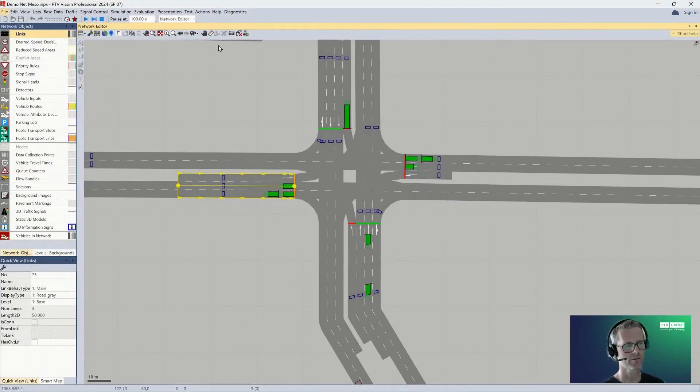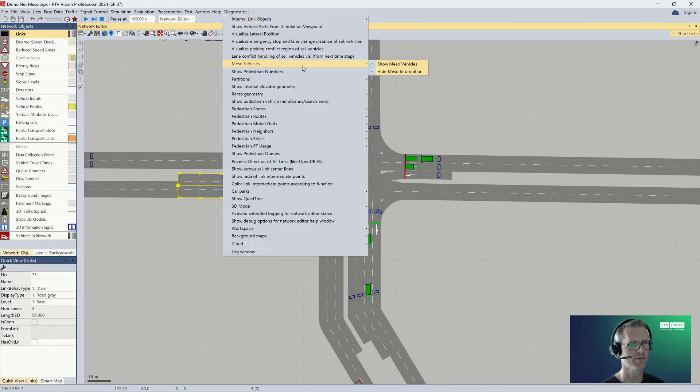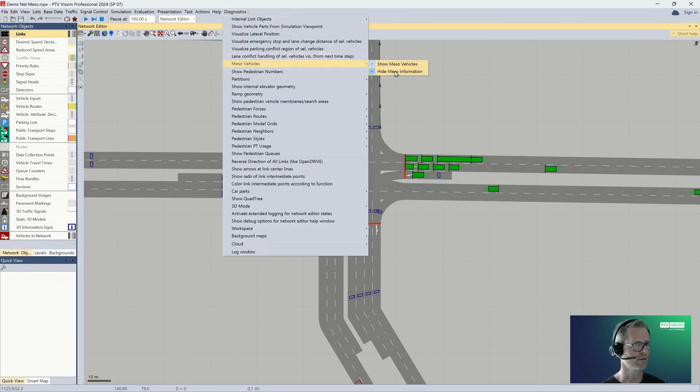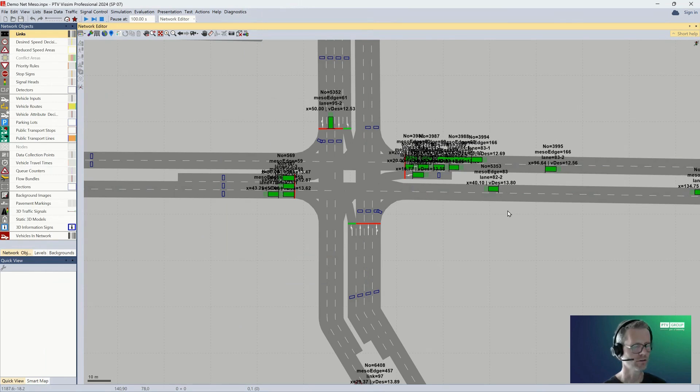It looks the same. There's just one change in the menu—you will find this additional entry 'Diagnostics.' Here on the meso vehicles, you will find the option to show meso vehicles, and you can hide or show the meso information for each vehicle. Then if you simulate, you see the moving vehicles. So it's a prototype, it's not perfect. You can see also some graphical glitches from time to time, but it gives you an impression if your model works as expected or not. As I said, you can also see some information for each vehicle there.